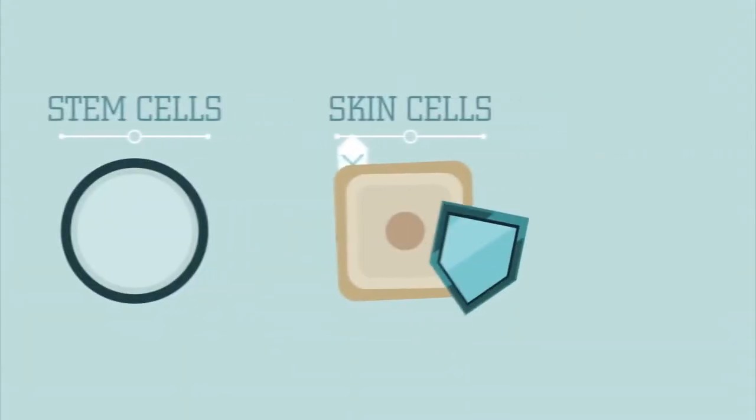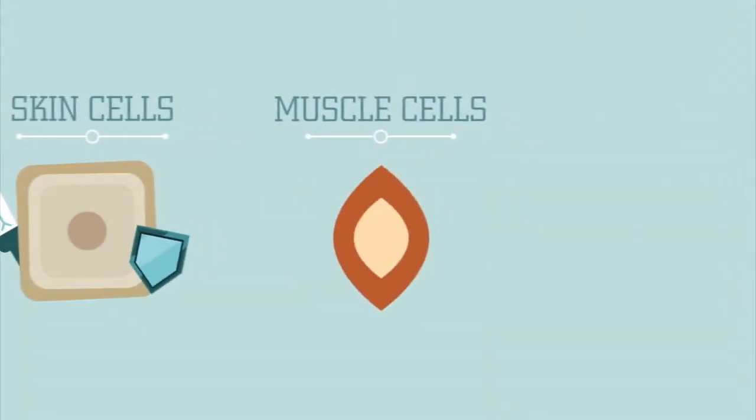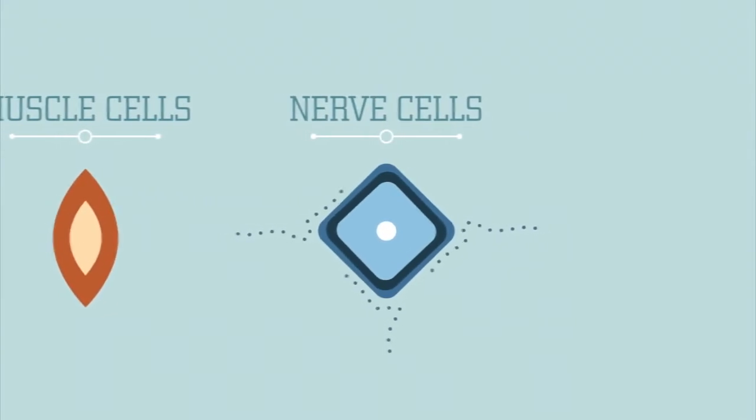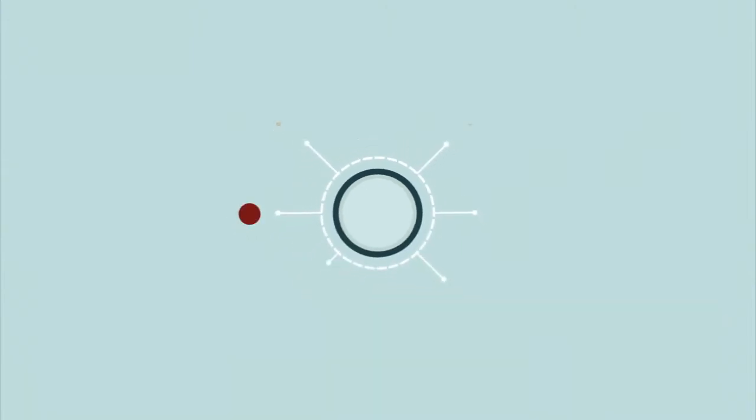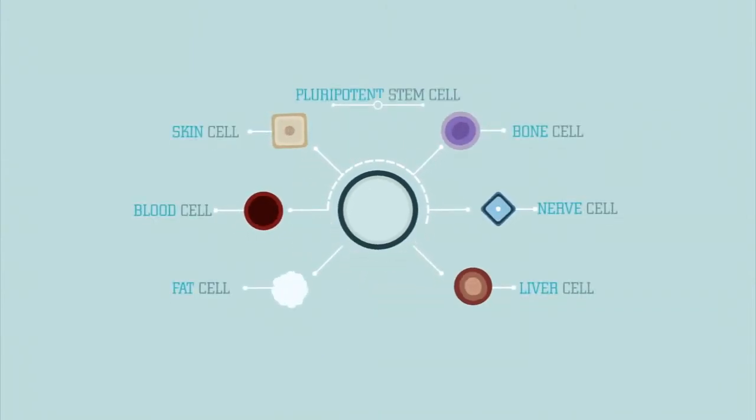While skin cells protect your body, muscle cells contract, and nerve cells send signals, stem cells do not have any specific structures or functions. Stem cells do have the potential to become all other kinds of cells in your body. Your body uses stem cells to replace worn-out cells when they die.